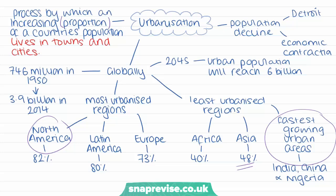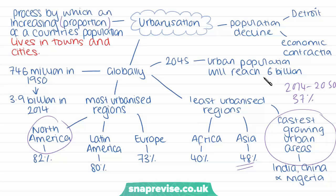India, China and Nigeria together are expected to account for 37% of the projected growth of the world's urban population between 2014 and 2050. The total world's urban population is expected to surpass 6 billion by 2045, and much of the expected growth will come from lower income countries in Africa and Asia. The fastest growing urban areas will be medium-sized cities and cities with less than 1 million inhabitants. In India alone, it's predicted that 70% of cities have yet to be built.